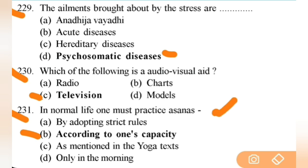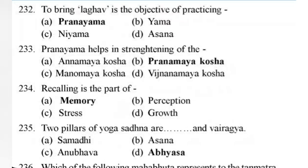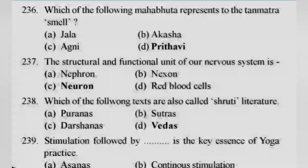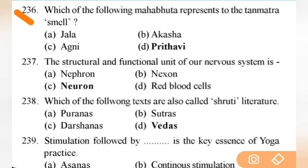In normal life, one must practice asanas according to one's own capacity — important. Next: to bring Laghuta (lightness) is the objective of practicing pranayama — very important, write it down. Next: pranayama helps in purifying the Pranamaya Kosha — important. Next: recalling is part of memory. Next: the two pillars of Yoga Sadhana are Abhyasa and Vairagya — important.